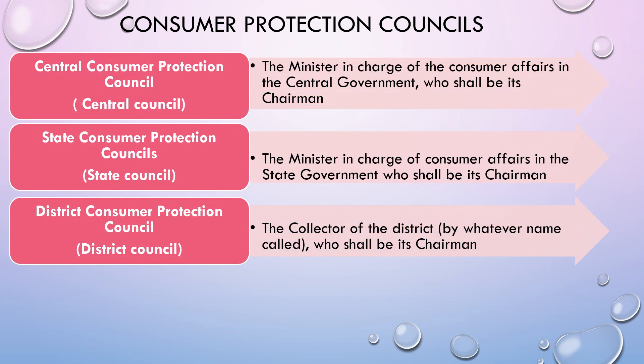Consumer Protection Councils are of three categories. First one is the Central Consumer Protection Council, which is also called as Central Council. The Minister in charge of Consumer Affairs in the Central Government will be the Chairman of this Council. At the State level, we have State Consumer Protection Councils, also called as State Council, where the Minister in charge of Consumer Affairs in the State Government will be the Chairman.